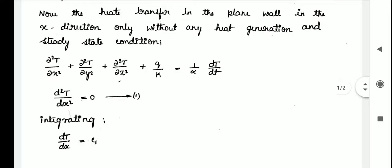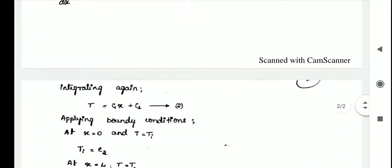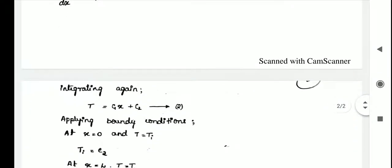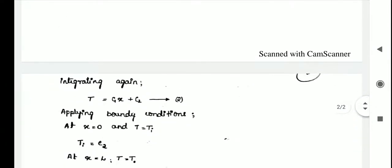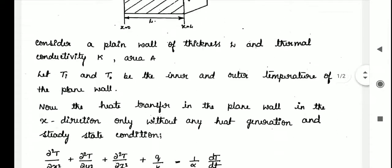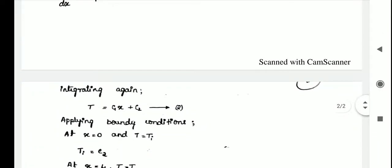Integrating equation 1, we get dT/dx = C1. Integrating again, T = C1·x + C2, labeled as equation 2. Now applying the first boundary condition: at x = 0, T = Ti, which gives Ti = C2.